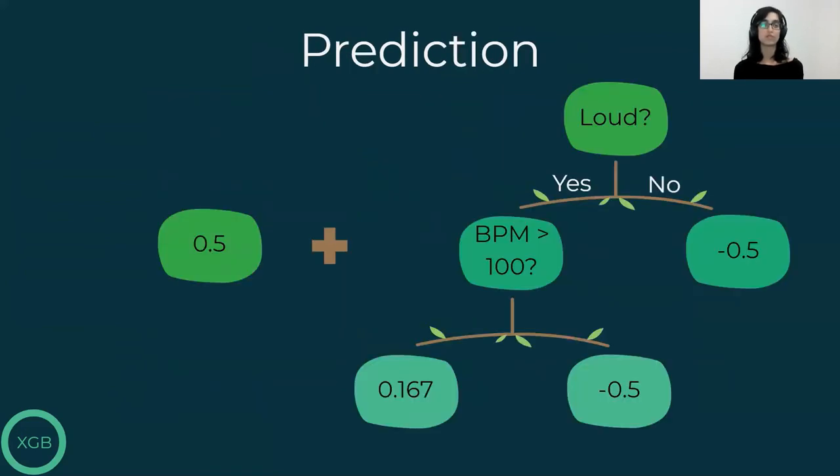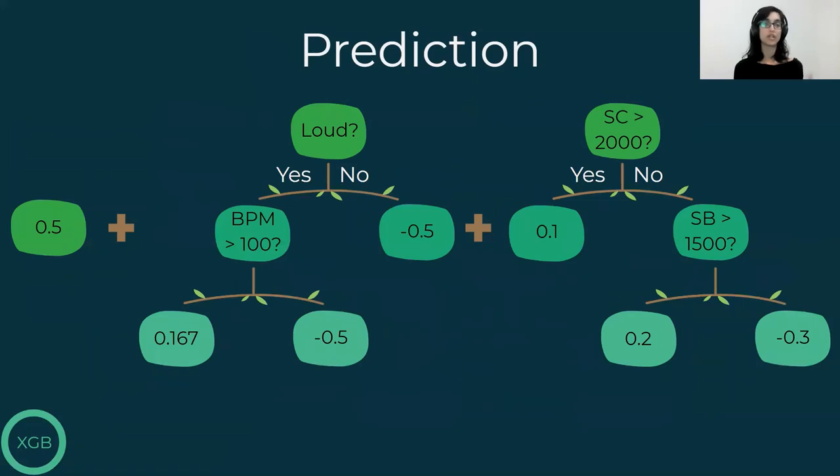So when we want to use that tree for prediction, we add its prediction to the initial prediction. So if a song is fast and loud, its prediction will be 0.5 plus 0.167, which is 0.667. And that is the general concept. Every time, we calculate the new residuals, which are the label minus the prediction, and build a new tree that tries to predict those residuals. And for prediction, we add the initial prediction to the prediction of each one of the following trees. Each tree gets us a little bit closer to the real value.